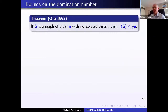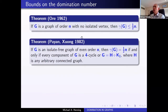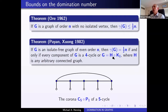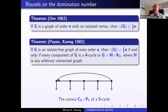Now shifting to domination: going back to 1962, Ore proved that for the domination number the bound is half the order — a very easy proof. Surprisingly it took 20 years to characterize the extremal graphs: a four-cycle or the corona of a graph. The corona is constructed by taking any graph and adding a pendant edge to each vertex. From every pendant edge you need to pick one vertex, otherwise the degree-one vertex won't be dominated.